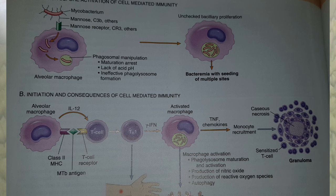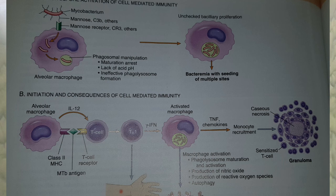Inside the macrophage, the bacteria prevents phagosome-lysosome fusion — that is, phagolysosome formation — by lipoarabinomannan through two mechanisms: it prevents the intracellular calcium concentration increase and the PIP3 pathway (phosphatidylinositol triphosphate pathway).